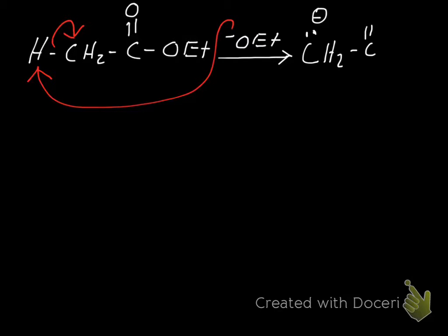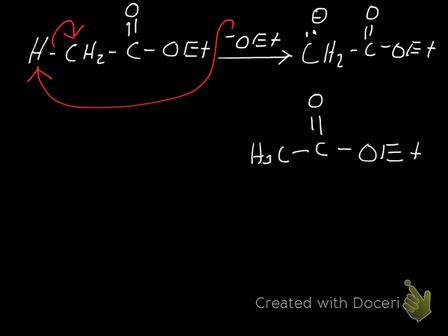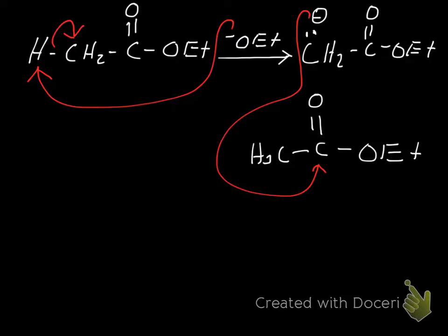We have the carbanion with two hydrogens attached to it, the carbonyl carbon, and the unchanged OEt. Now our second equivalent of ethyl acetate comes into play. The negative charge on this CH2 group is going to attack the carbonyl carbon of our second equivalent of ethyl acetate. Since that would make five bonds to carbon — not okay — we need to kick the electrons from the pi bond up onto the oxygen, giving the oxygen a negative charge.